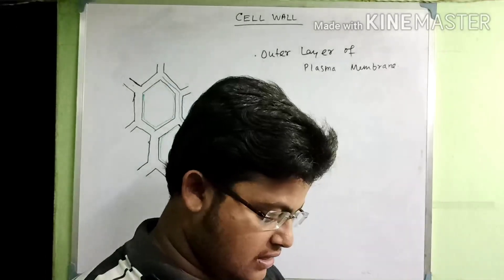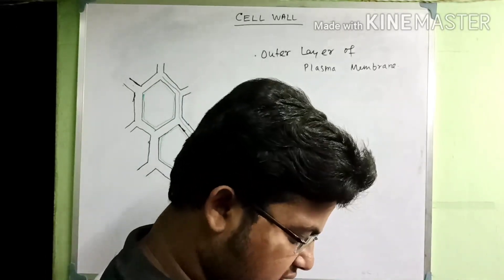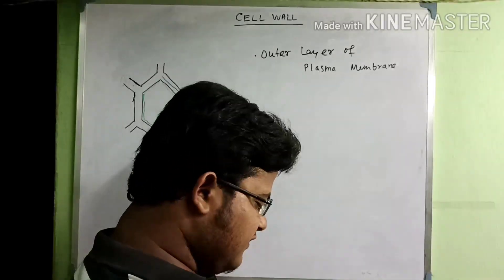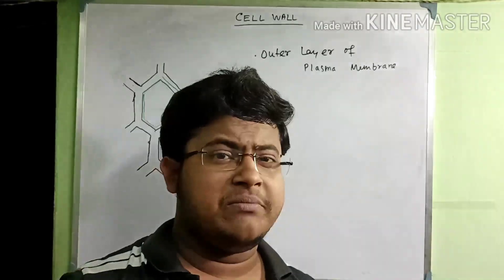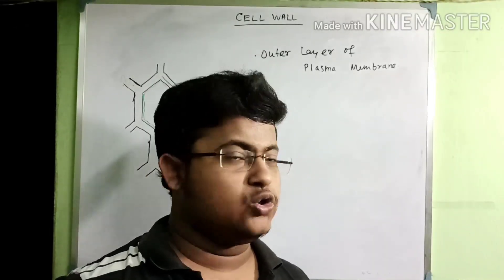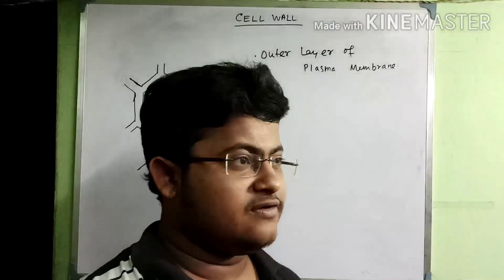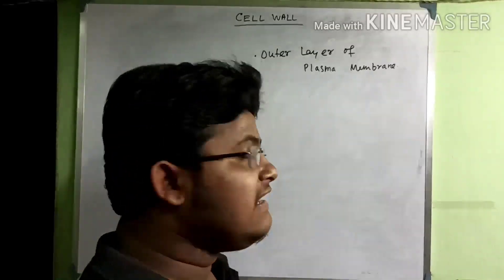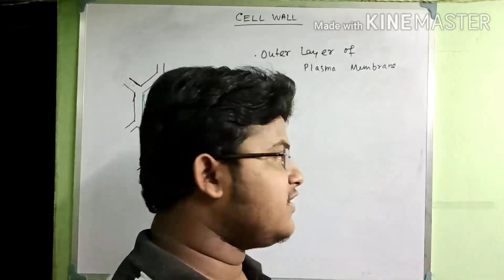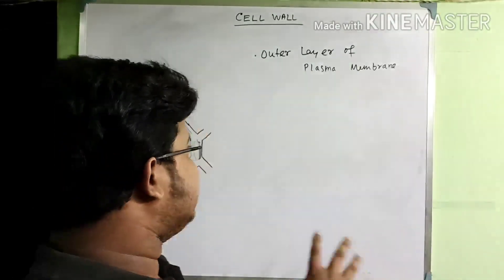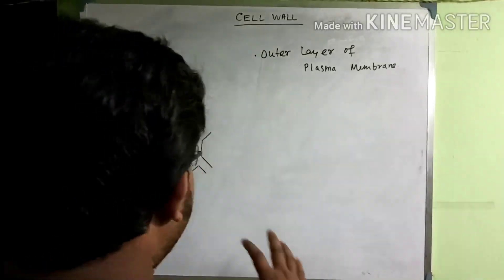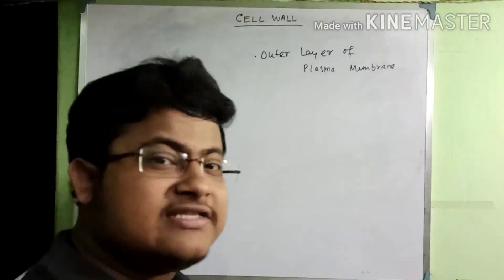In this video we will learn about the ultrastructure. From the previous video we learned about pectin, hemicellulose, cellulose, as well as extra substances like lignin, cutin, suberin — these are the names of the chemical compounds present throughout the plant cell wall.